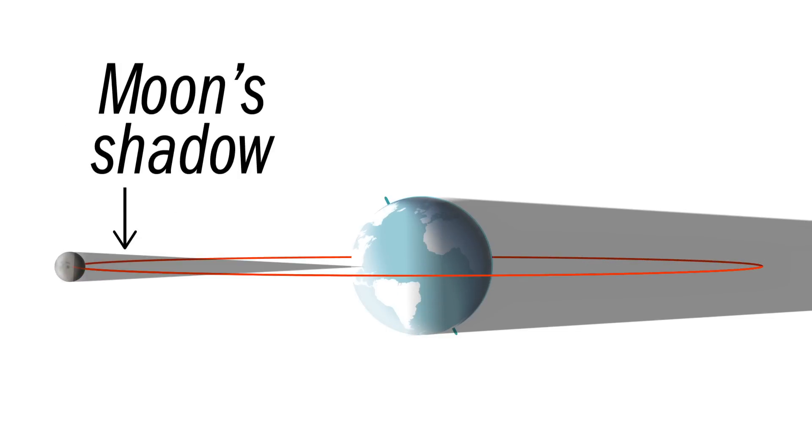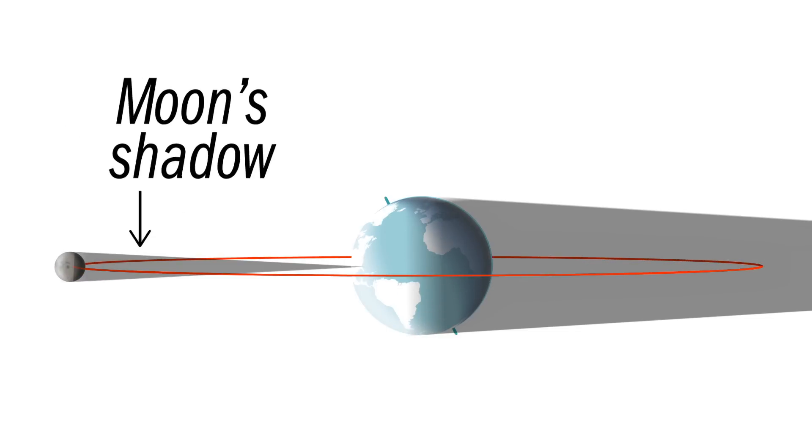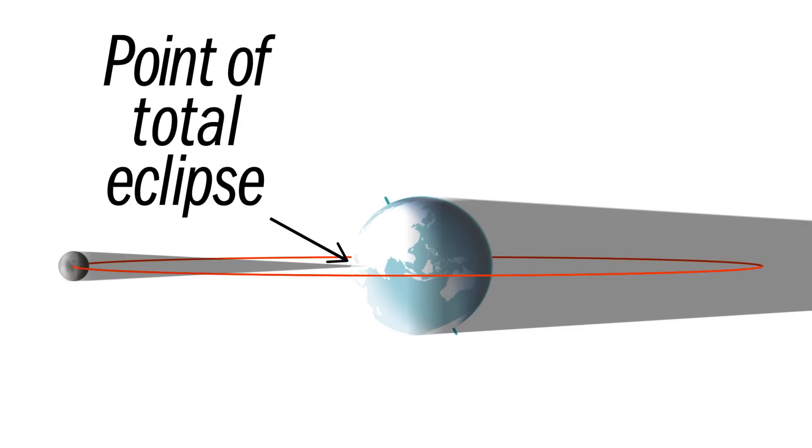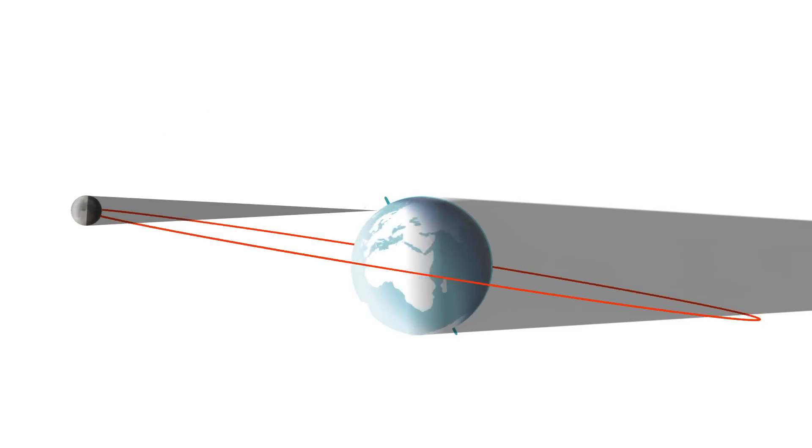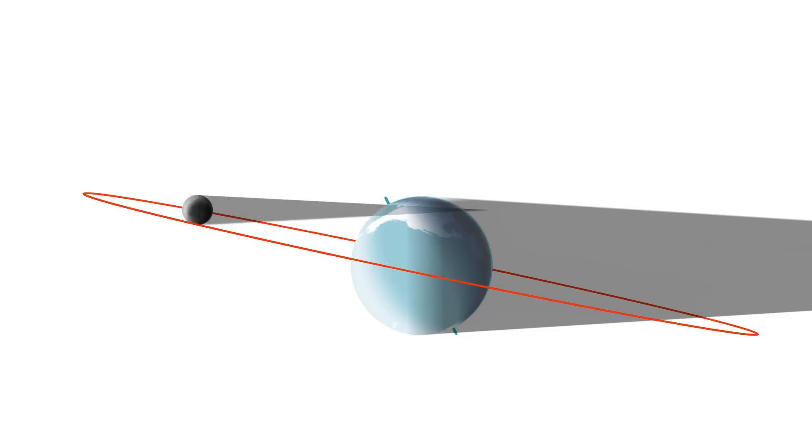so why doesn't its shadow touch the Earth, causing an eclipse with each pass? Partly because the Moon's orbit is tilted slightly, which causes its shadow to miss the Earth most of the time.